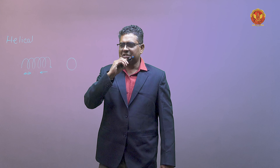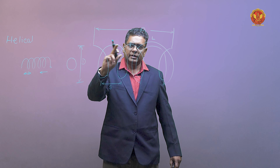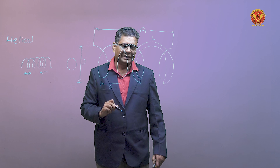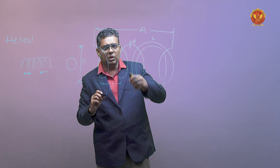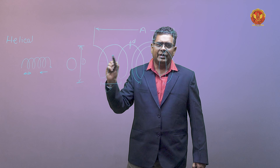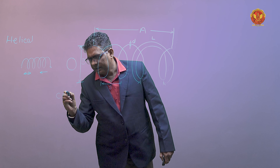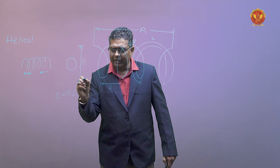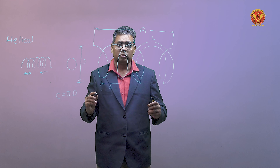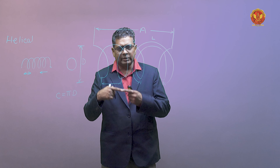अब हम इसका construction देखते हैं। हमारे पास एक wire था, जिसको हमने cylinder के ऊपर लपेटा है। इस cylinder के ऊपर लपेटने के बाद — ये जो d है, ये diameter of helix है, यानि उस cylinder का diameter है जिसके ऊपर हमने इस wire को लपेटा है। C क्या है — C circumference है उस cylinder का, यानि C is equal to pi×D। S क्या है — it is the spacing between two turns, center to center।